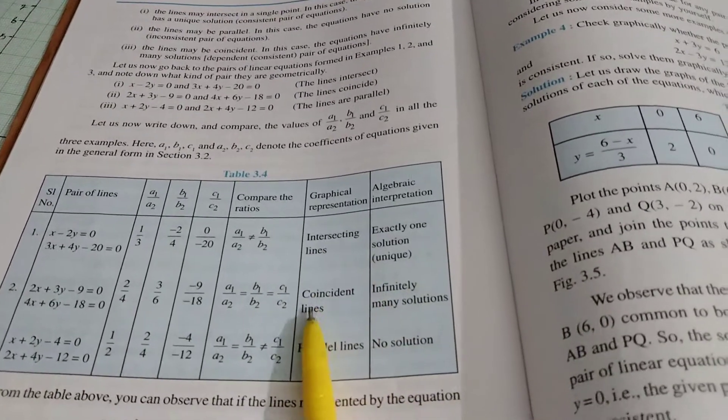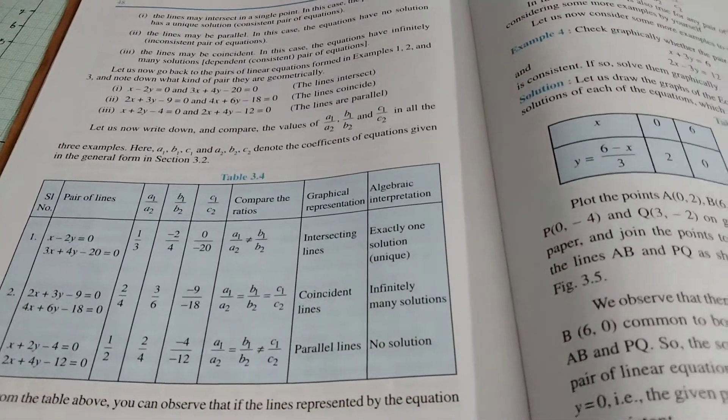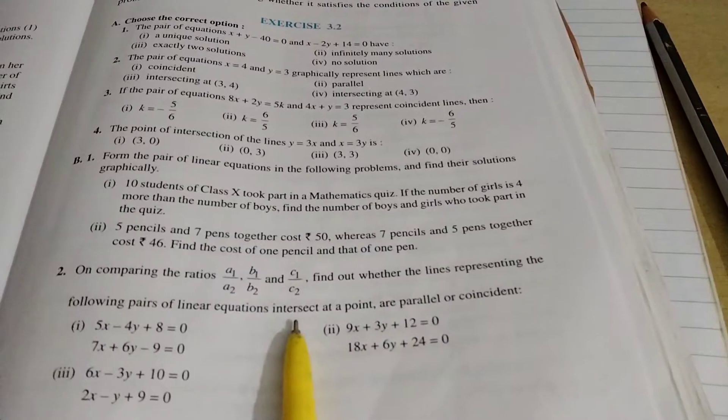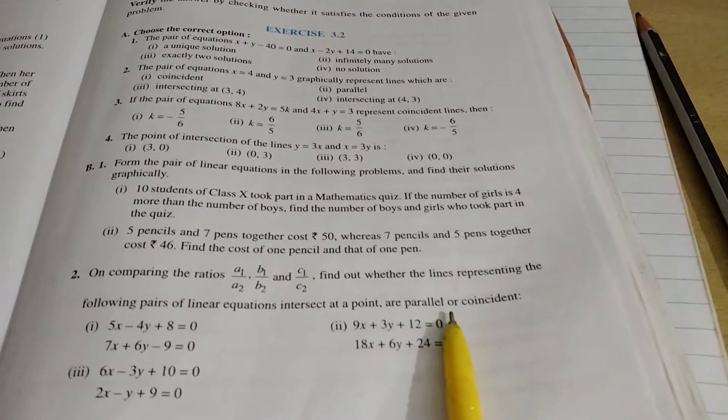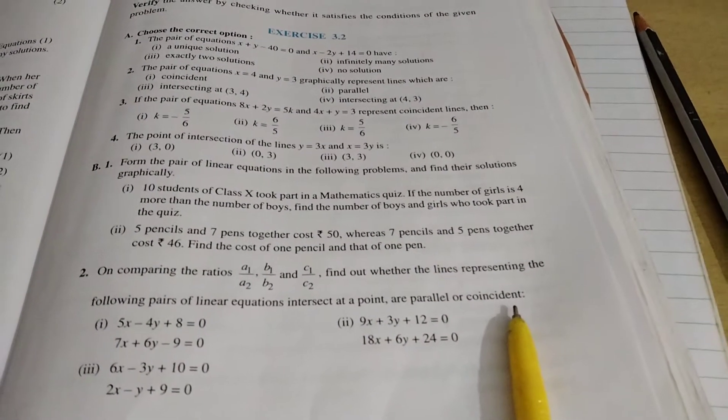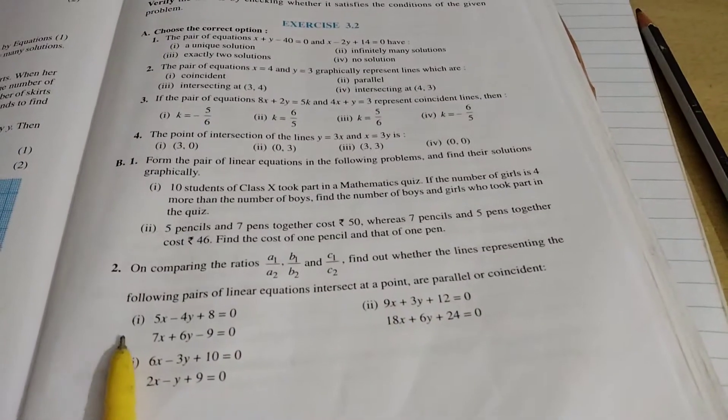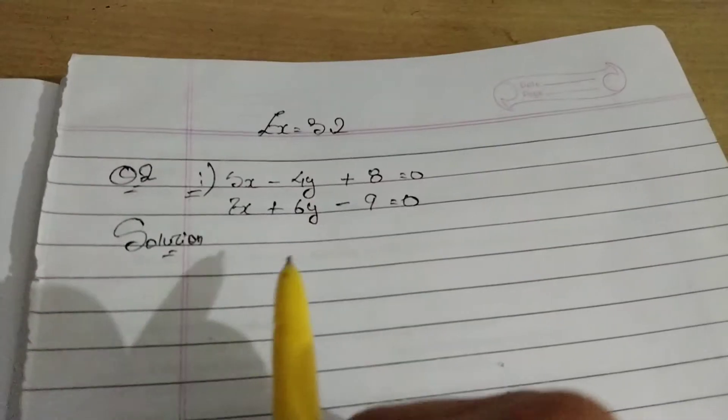So this is the other one. Intersecting, coincident and parallel line. I hope you have understood. So now let's start 2.1. Okay, let's start.